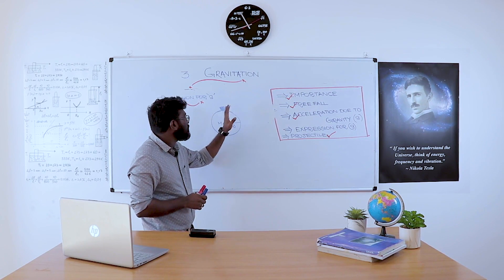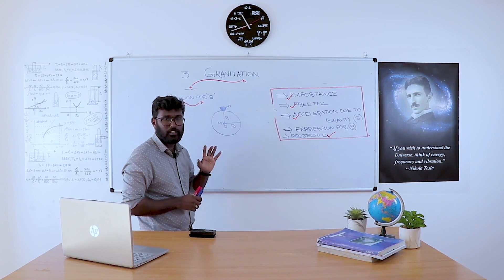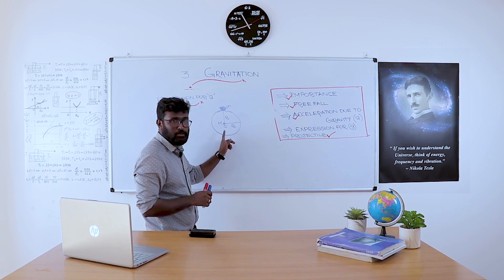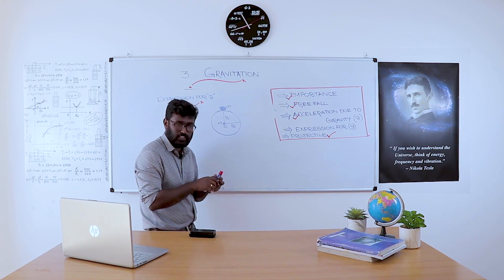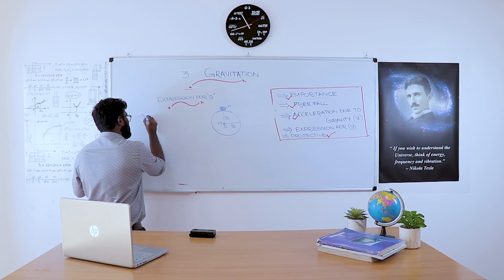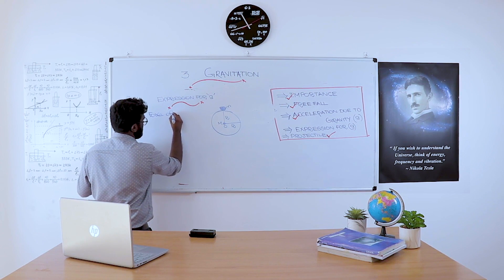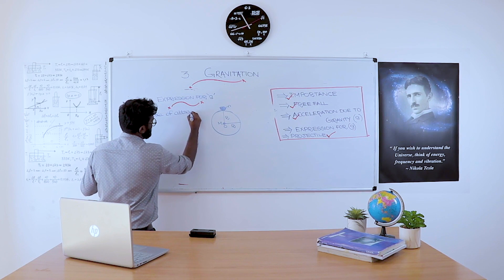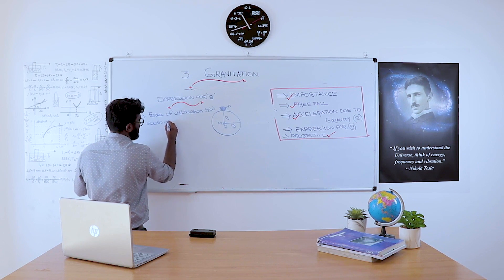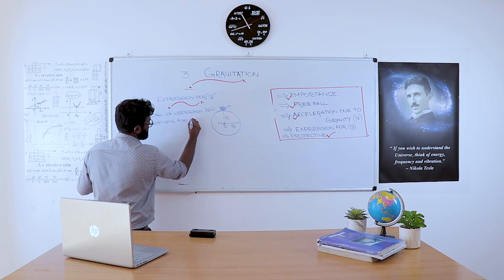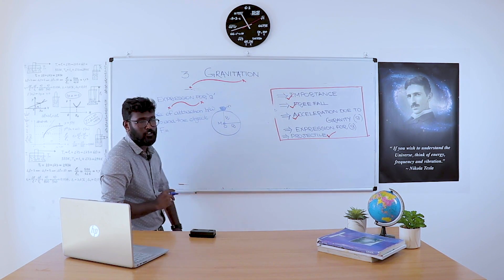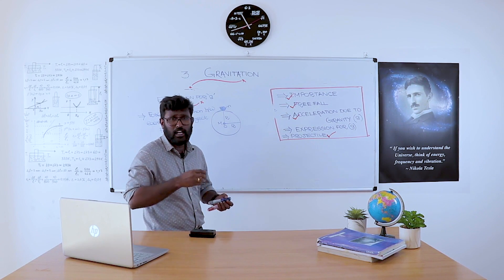Assuming that a particle of mass small m is on the surface of the earth. As per the universal law of gravitation, there is a force of attraction between the earth and the object. The force of attraction F between earth and the object is given by the universal law of gravitation.